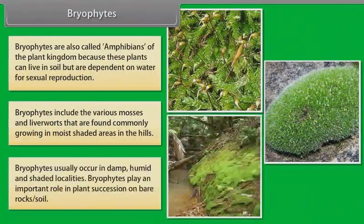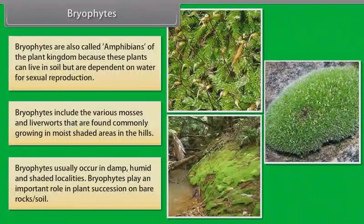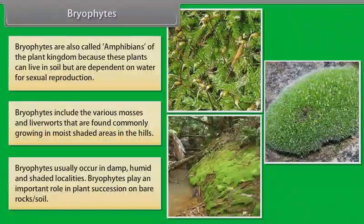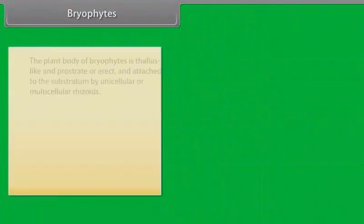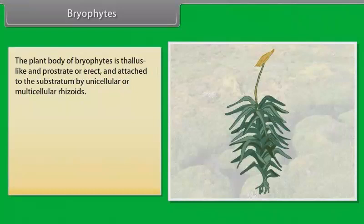Bryophytes usually occur in damp, humid, and shaded localities. Bryophytes play an important role in plant succession on bare rocks or soil. The plant body of bryophytes is thallus-like and prostrate or erect, and attached to the substratum by unicellular or multicellular rhizoids.